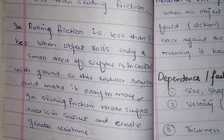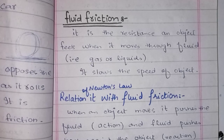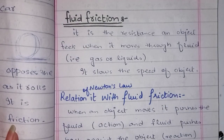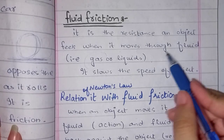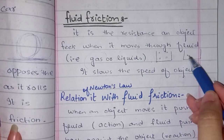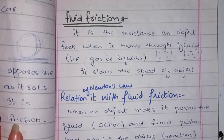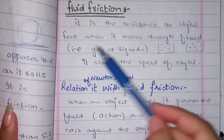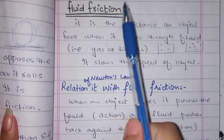Next is fluid friction. In fluid, you have both gases and liquids. An important point is that both gases and liquids are fluids because they have intermolecular forces but their molecules are far apart, so they can move easily. Fluid friction is the resistance an object feels when it moves through a fluid.